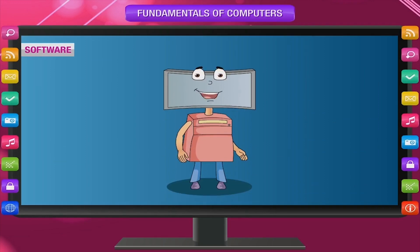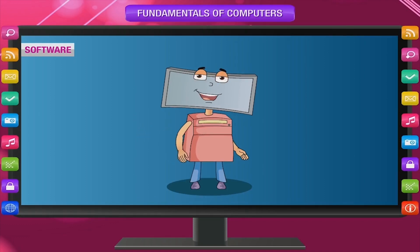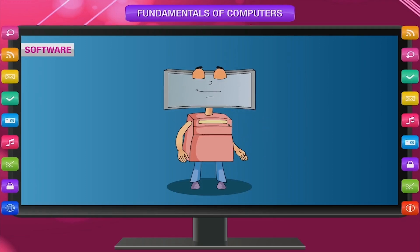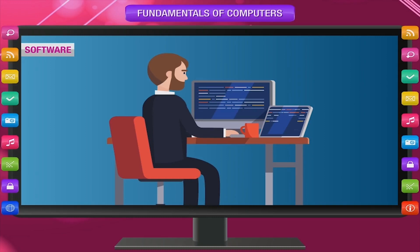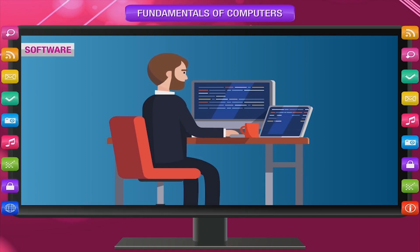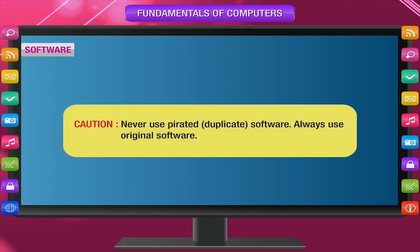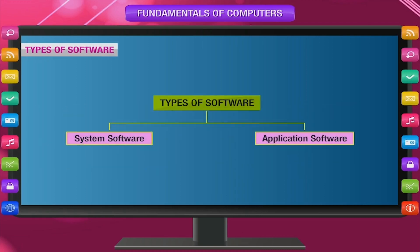Next, software. Hardware alone cannot perform any task without being instructed exactly what to do and in what order to do it. These instructions are as important as hardware. A program is a set of instructions given to the computer. Software is a set of programs that enables the computer to do a certain task. Without software, the hardware parts of the computer system cannot do anything. Never use pirated or duplicate software — always use original software.